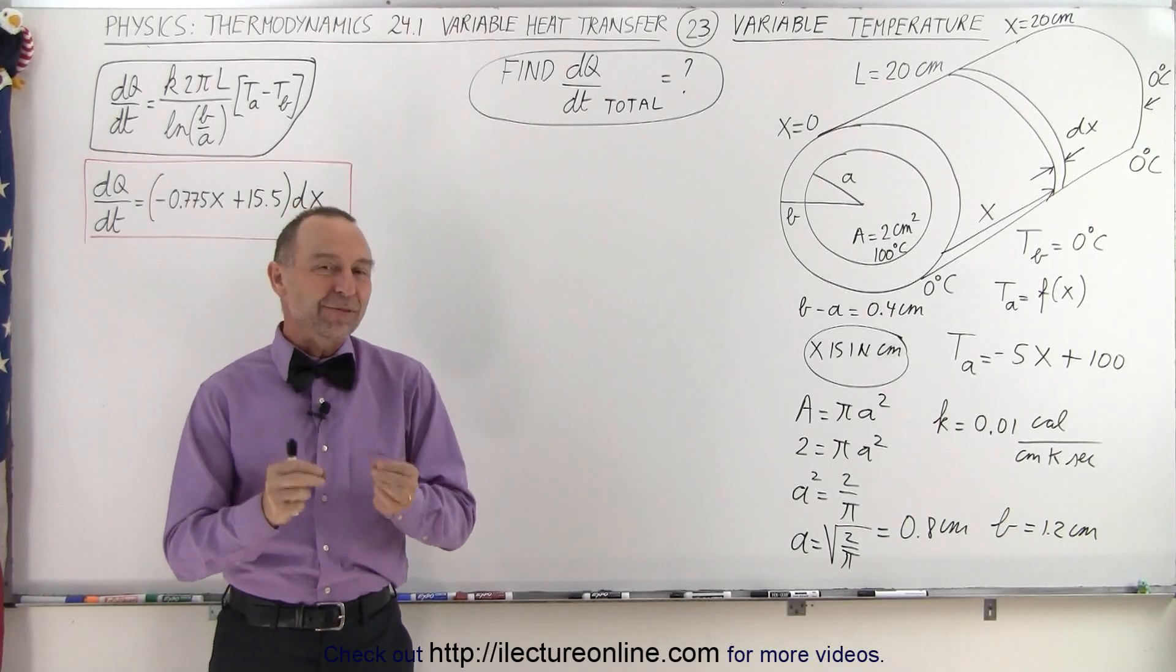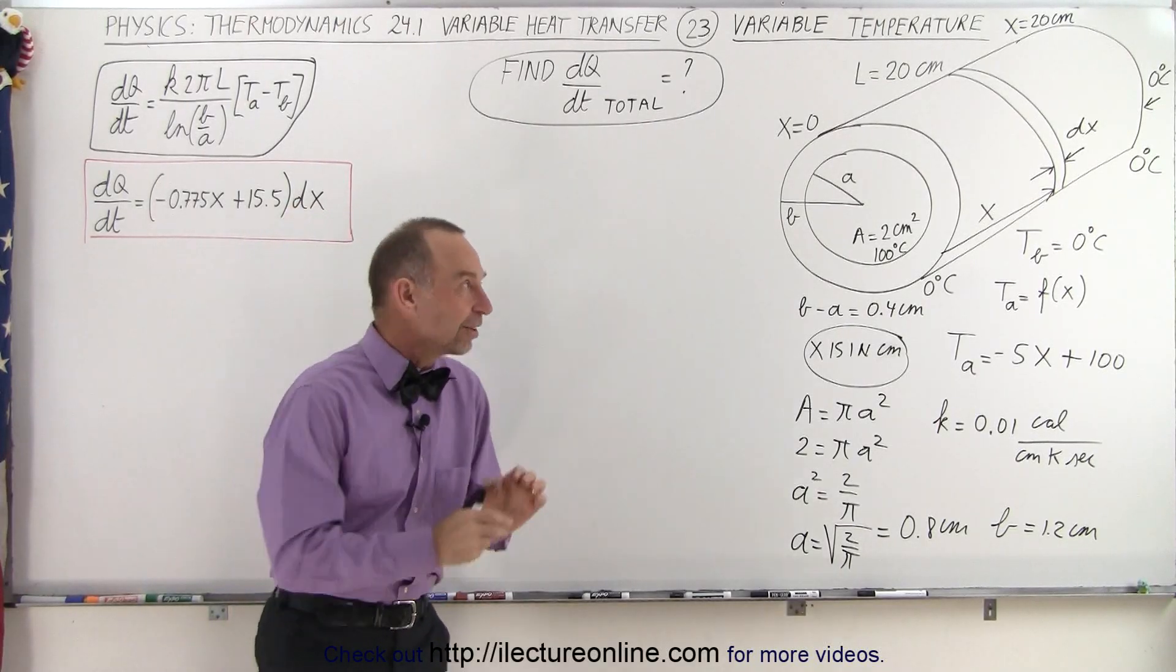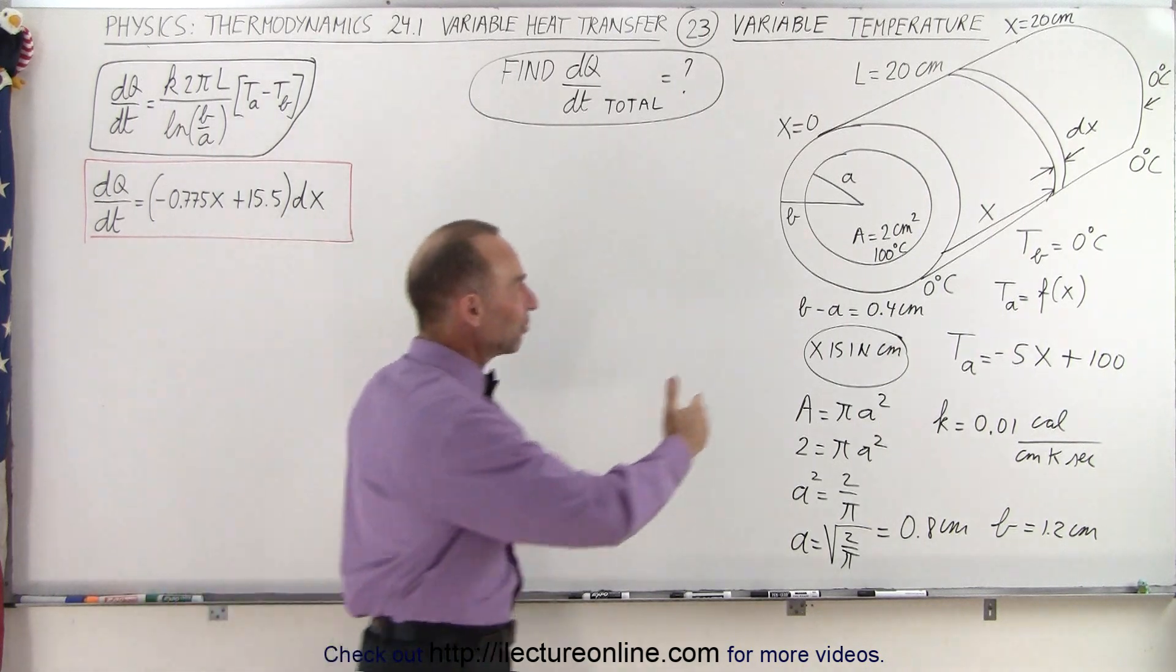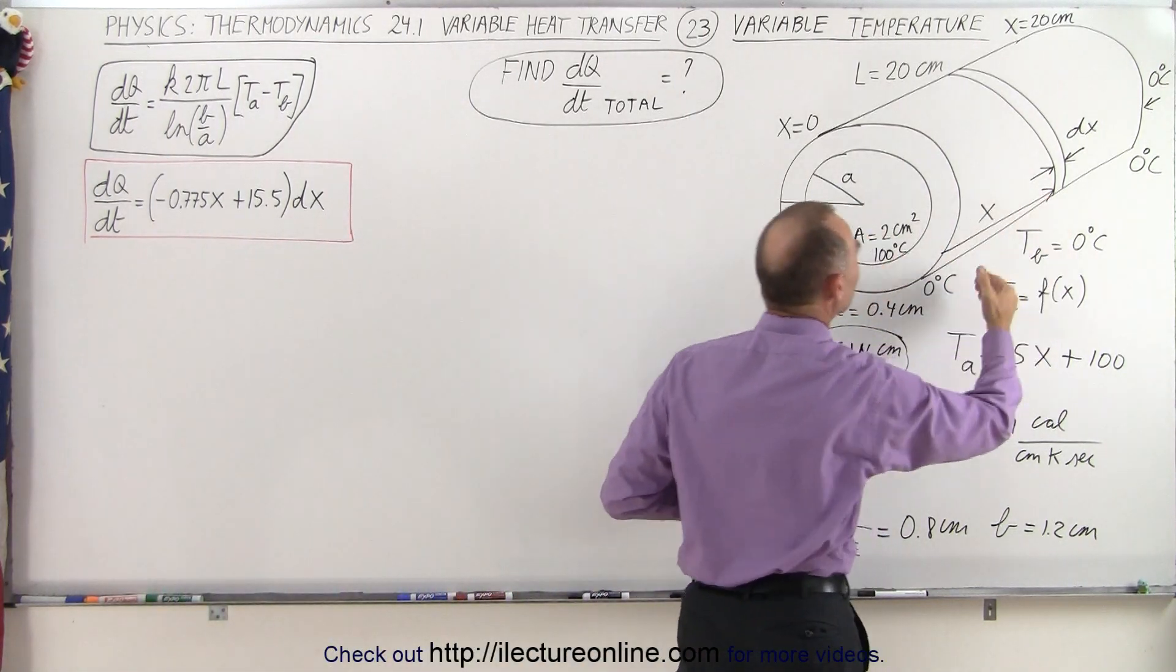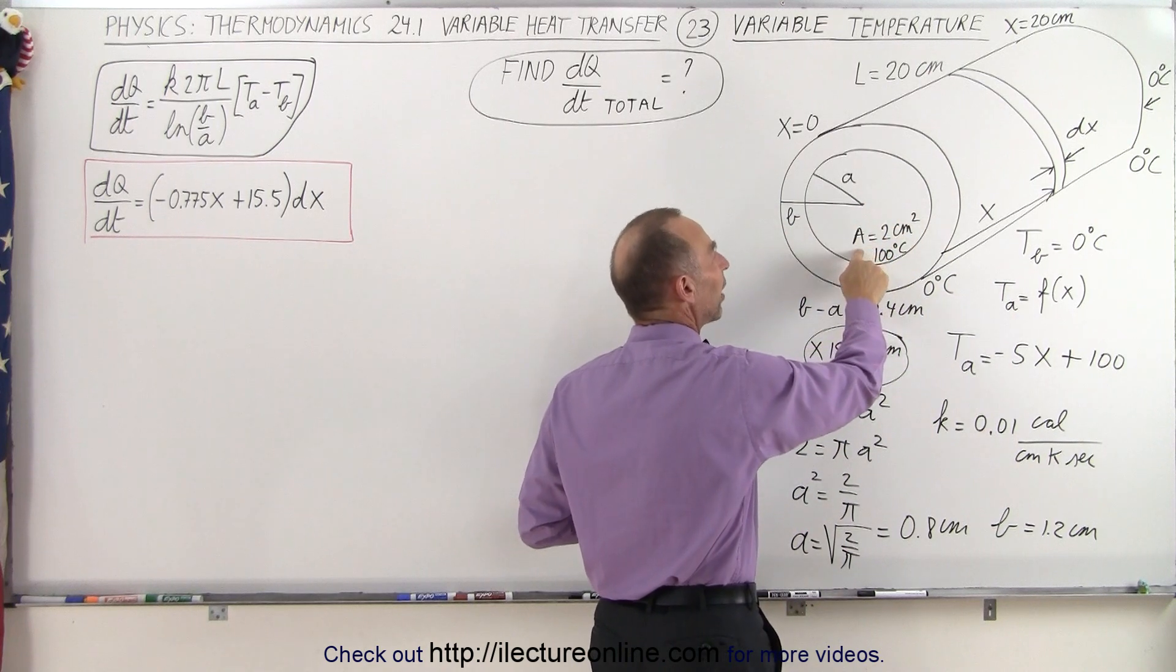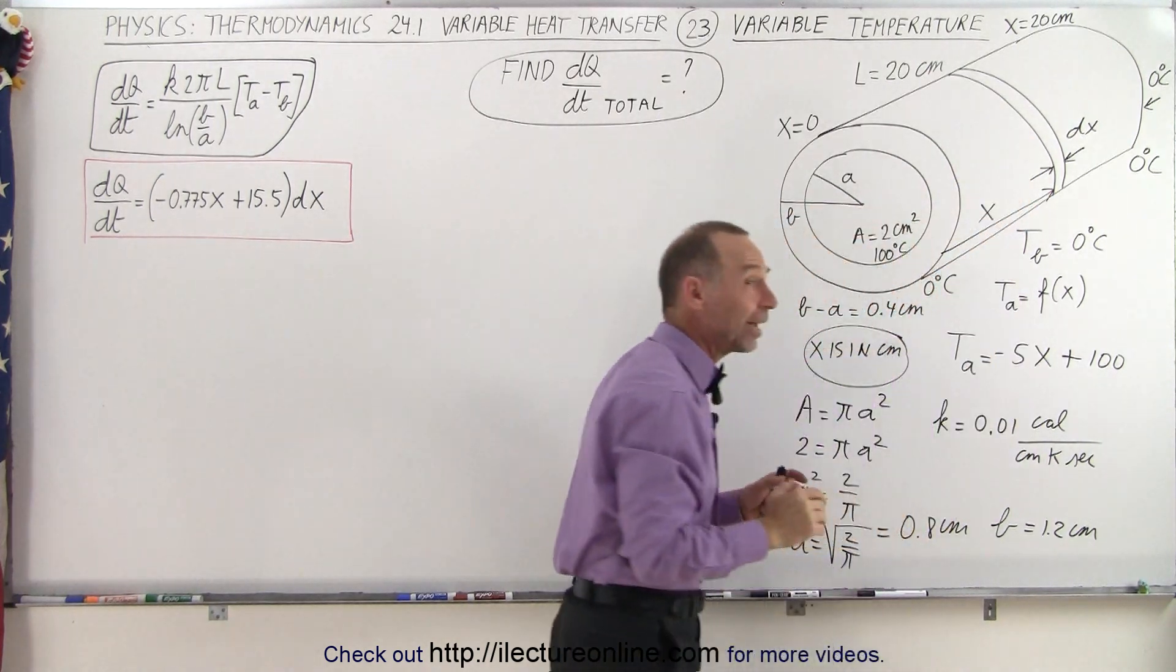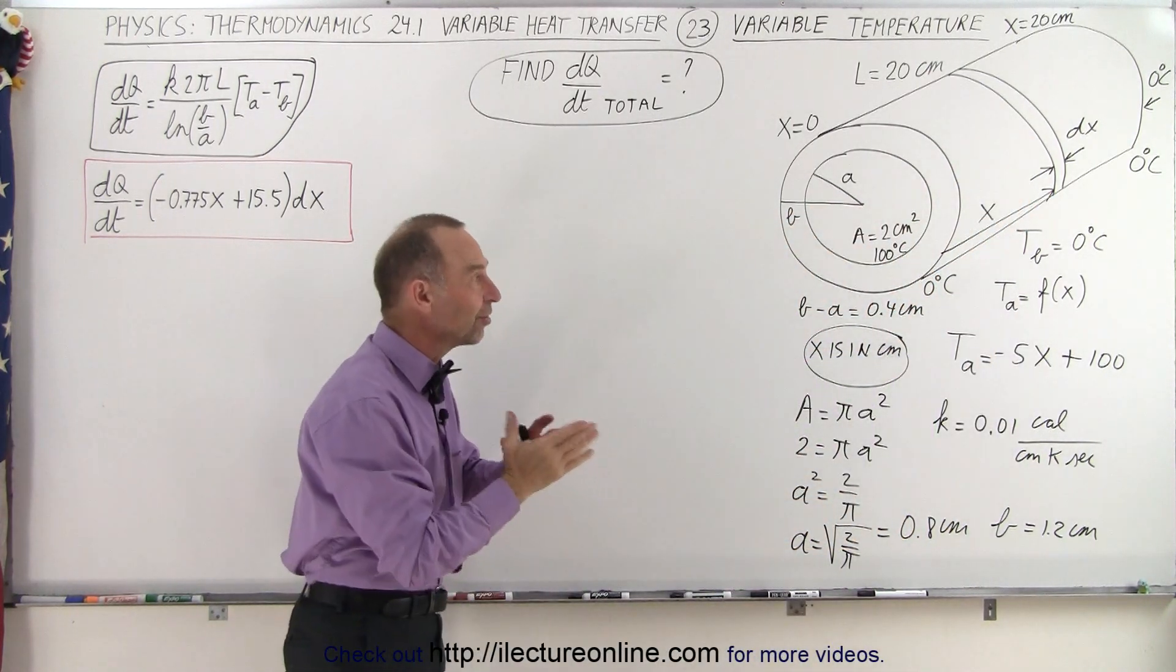Welcome to our lecture online. In the previous video we found an equation that described the heat conduction as a function of position because the inside temperature changed from 100 degrees on one side to 0 degrees on the other side, while the outside temperature was at 0 degrees.